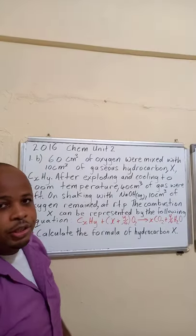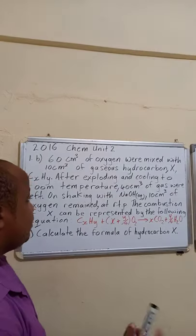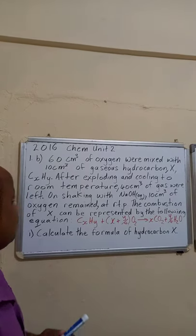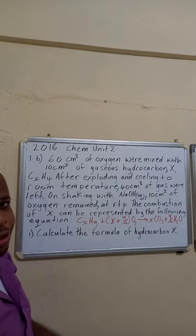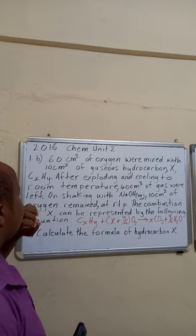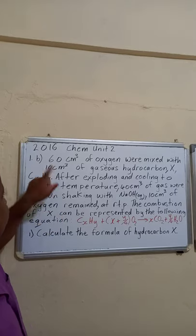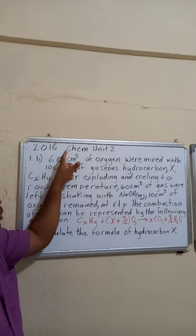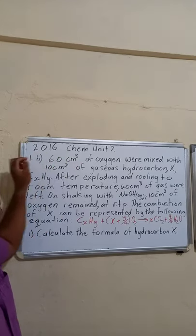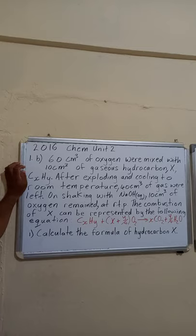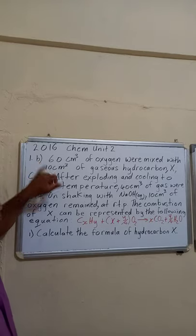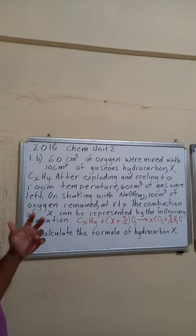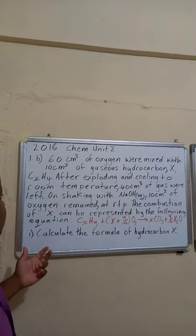Welcome back to the channel. In this video we are going to work through the organic chemistry questions from the 2016 paper, Chemistry Unit 2. We will start with question 1b — 1a is a definition for structural isomerism, which everybody should know.